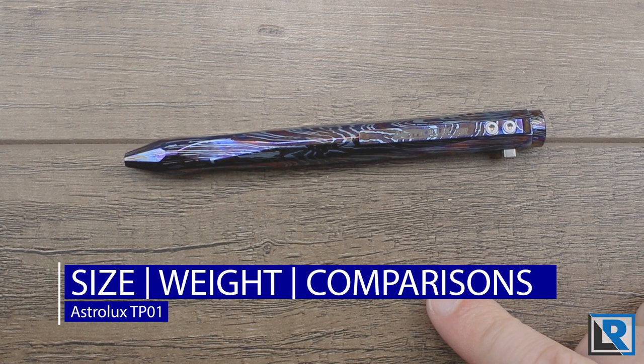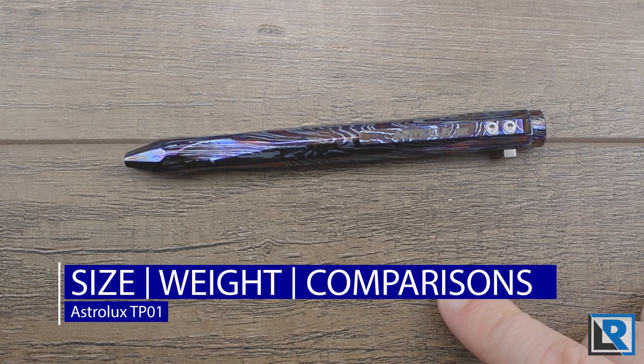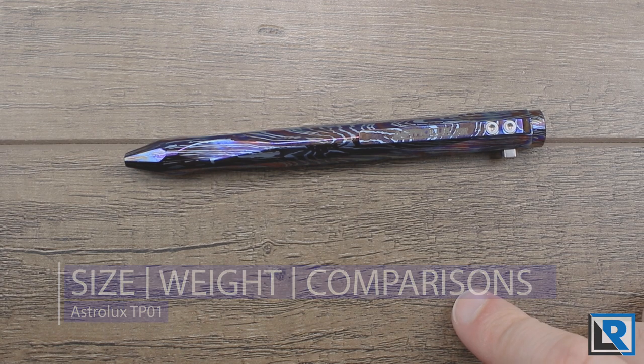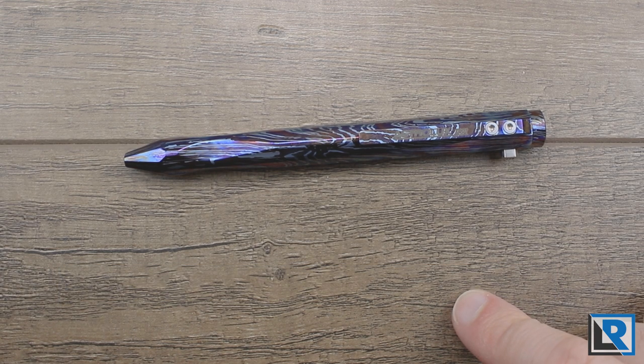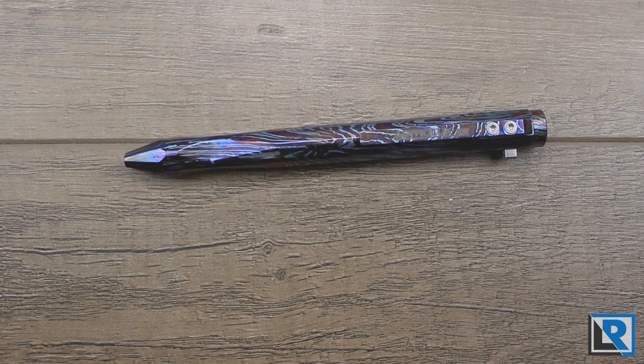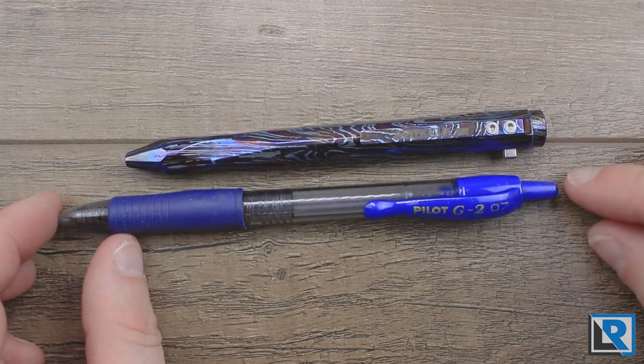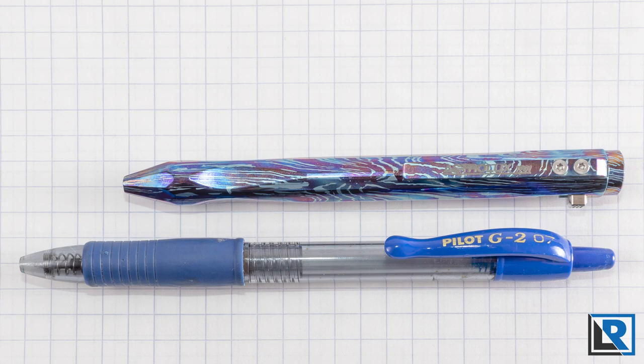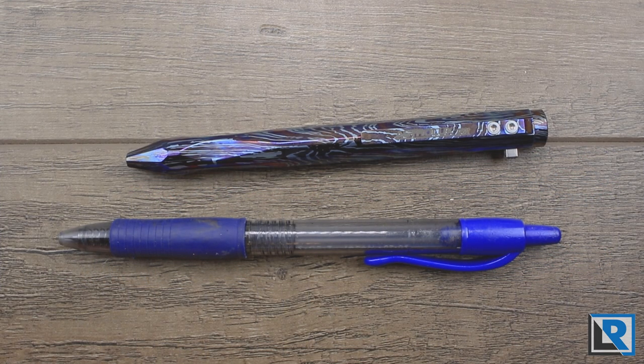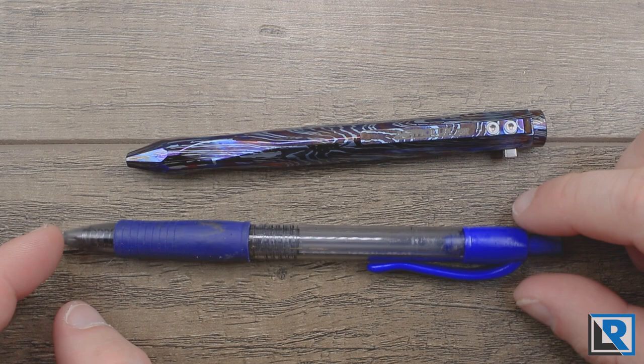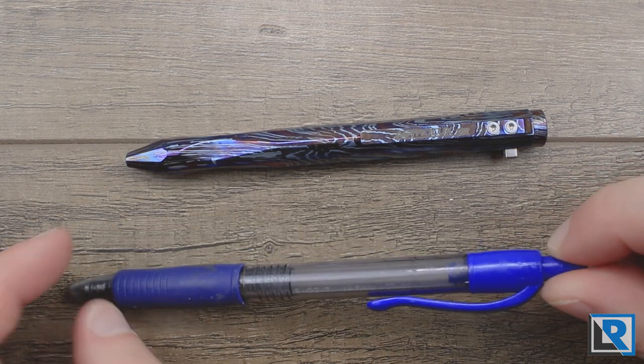For size and weight, I measured this at 119 millimeters, diameter at 11 millimeters. Weight with the cartridge is 33.6 grams. This is a little bit shorter than your standard pen. Here's a Pilot G2 lined up and you can see that G2 is a little bit longer in overall length. The shorter size of the Astrolux doesn't bother me at all, it's just fine.